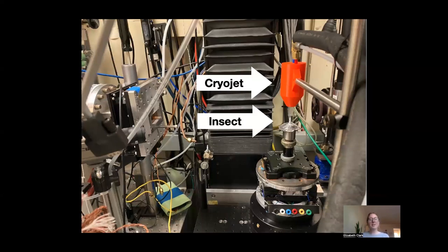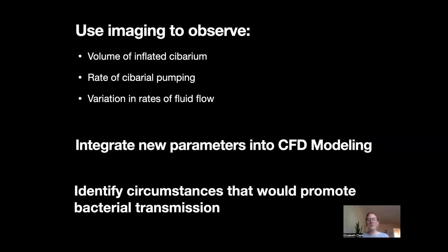We integrated parameters from our 3D imaging to generate computational fluid dynamic simulations of the interface between the xylem vessel and the insect food canal, to answer questions about the fundamentals of feeding, like how much pressure insects need to apply to extract sap. But we want to build models that look at fluid flow over time, and to do that we need parameters regarding how much and the rate of fluid flow through the food canal. So we actually had to create a new tool at the synchrotron called the cryojet, which sprays liquid nitrogen vapor over the specimen so we can image them while they're frozen. We flash froze insects during different stages of xylem sap feeding and used this new tool to keep them frozen during the scan. Using this new imaging technique, we aim to measure the volume of the inflated cybarium, the rate of cybarial pumping, and observe the range of variation in fluid flow. We will then integrate these new parameters into our computational fluid dynamics modeling to identify circumstances that would promote bacterial transmission.